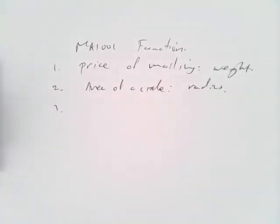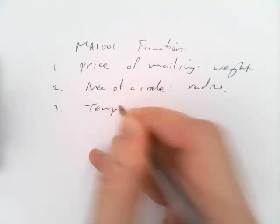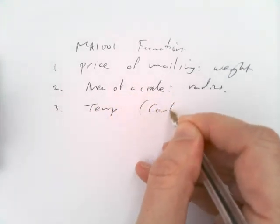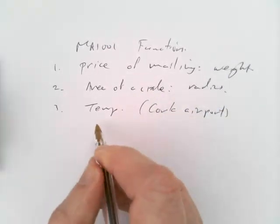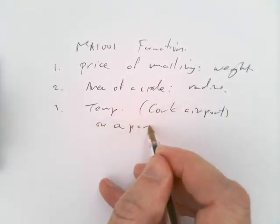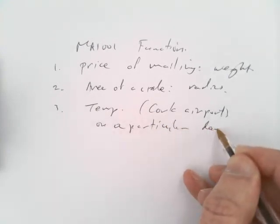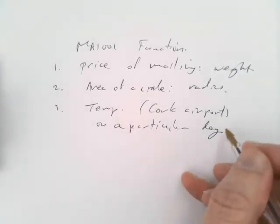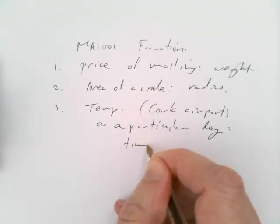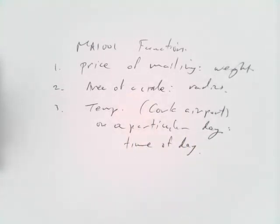Another one where we don't have any kind of formula, but where something happens in the world: we could look at the temperature at some particular place, say at Cork Airport. We could look at that on a particular day. But of course, it depends on what time it is, time of day. So different times of the day, you have different temperatures.